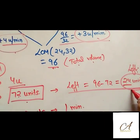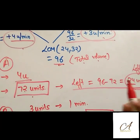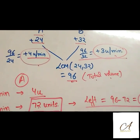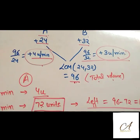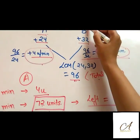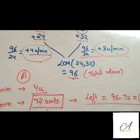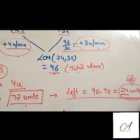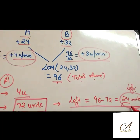Now this left part is to be filled by B. This is actually the trick, just to find out after how much time B has to be closed. The trick is that 24 units has to be filled by B alone.